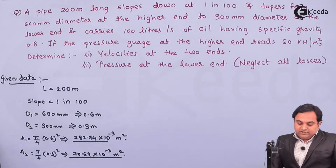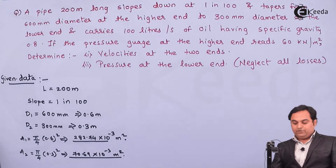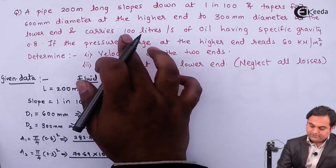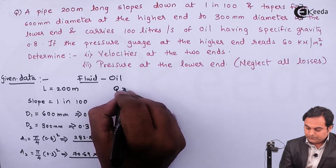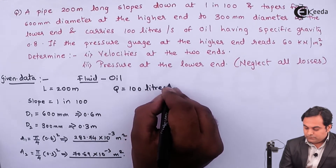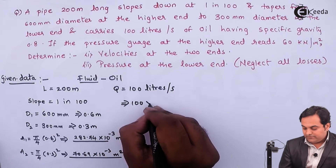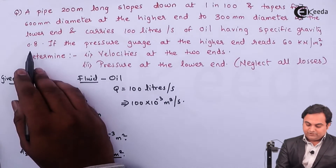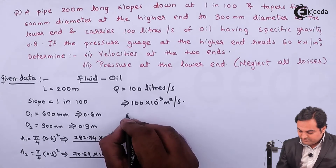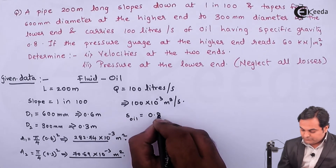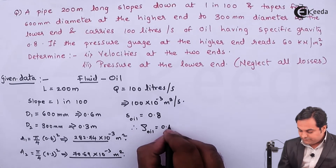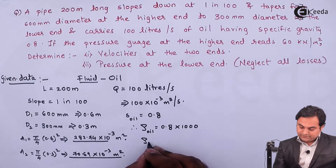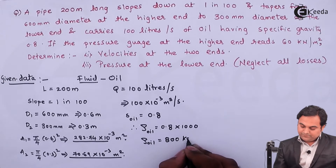The lower end diameter is 300 mm. The pipe carries 100 liters per second of oil, which we convert to 100 × 10⁻³ m³/s. The specific gravity of oil is 0.8, so the density of oil = 0.8 × 1000 = 800 kg/m³.